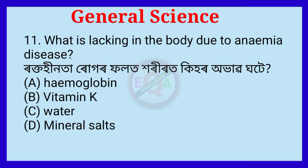Question number eleven. What is lacking in the body due to anemia disease? The correct option is Option A: Hemoglobin.